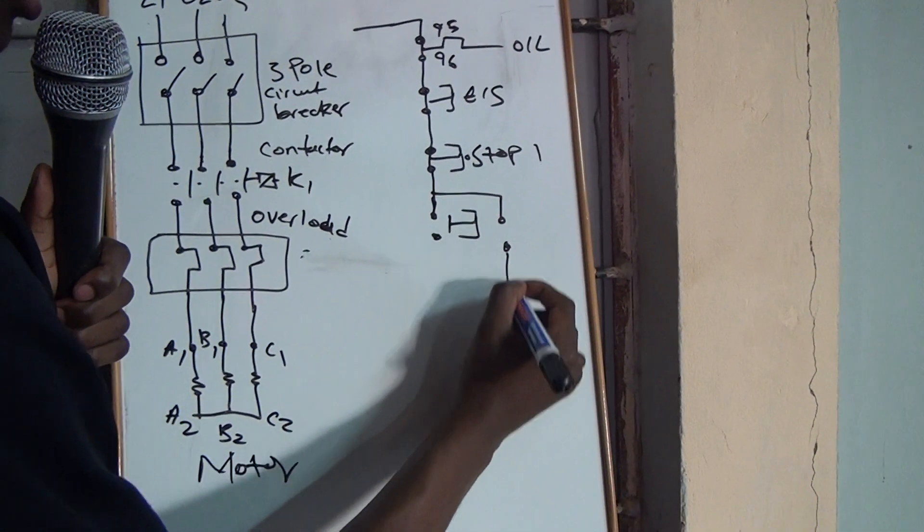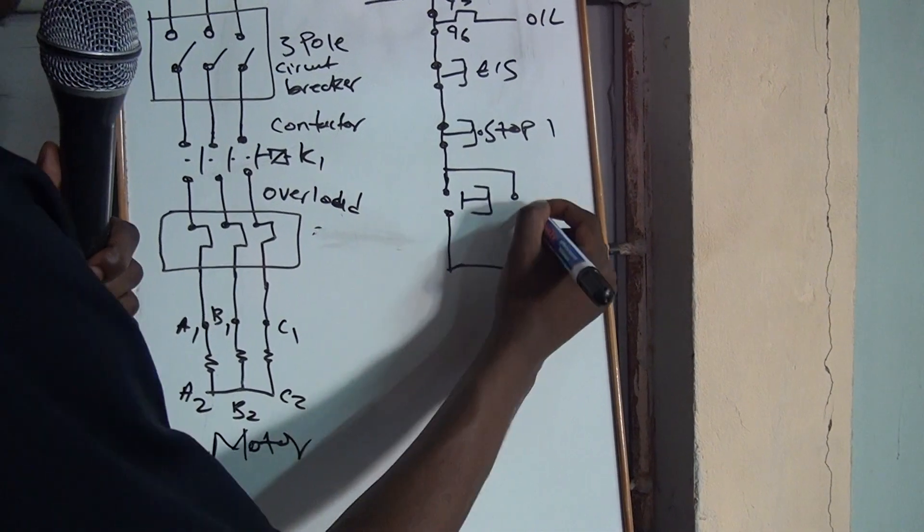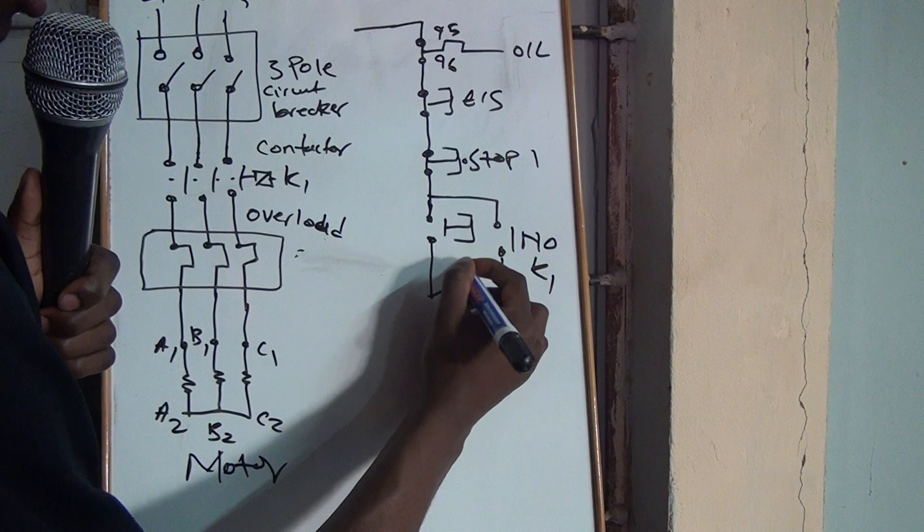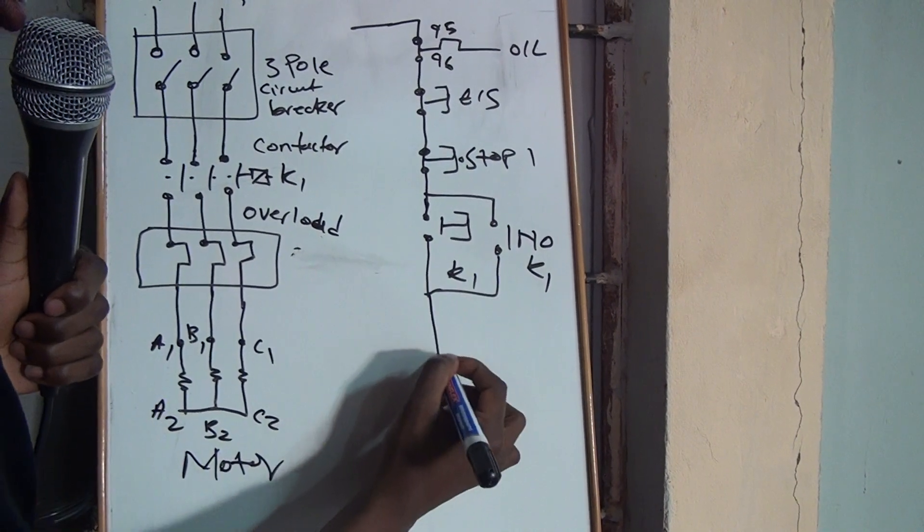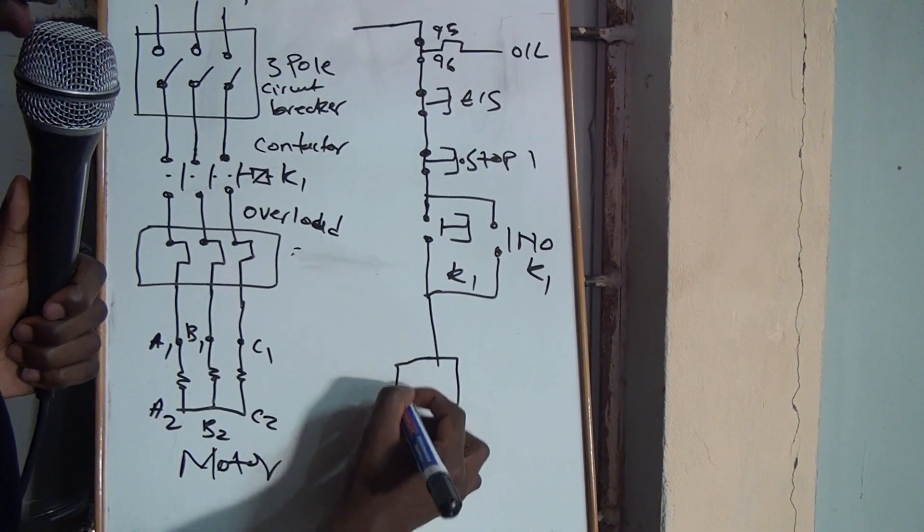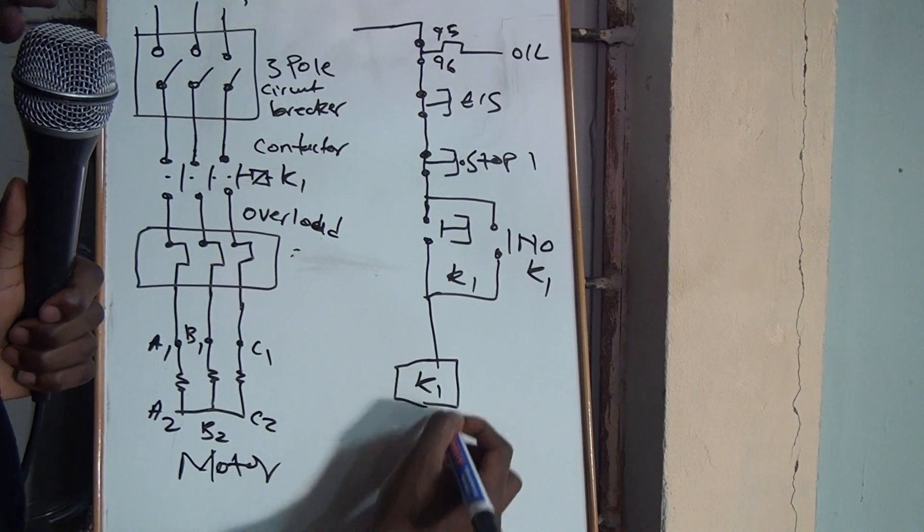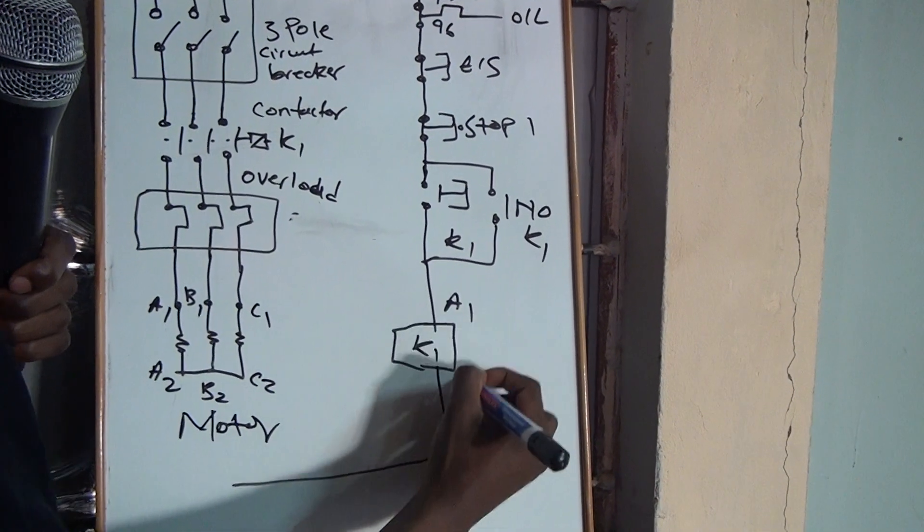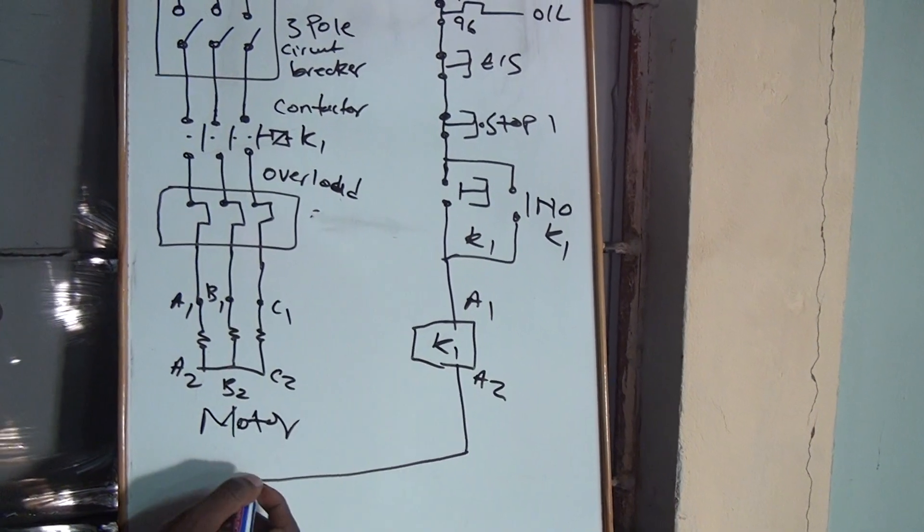Direct online is straightforward. Then, normally open of K1, K1. You have your A1, A2.